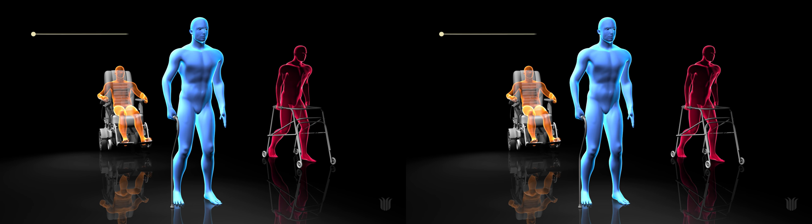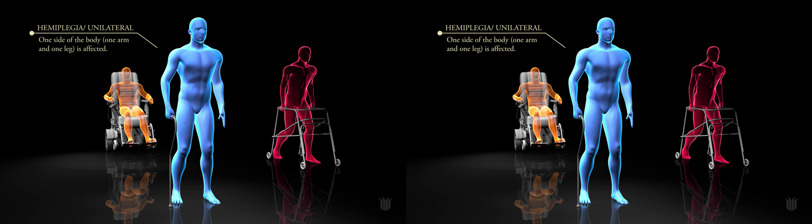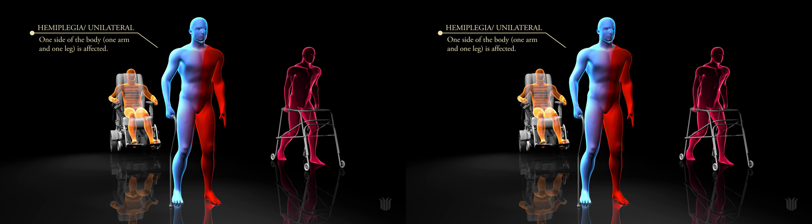When one side of the body is affected, for example the left arm and the left leg, this is called hemiplegia.